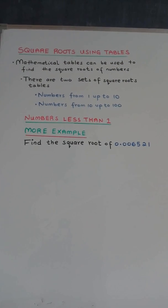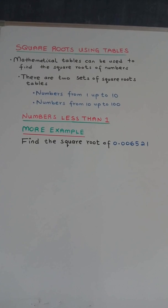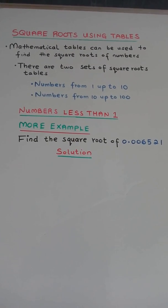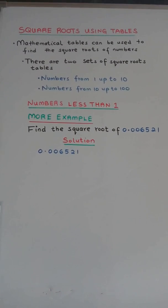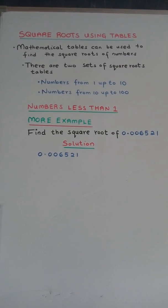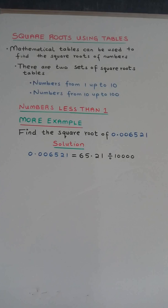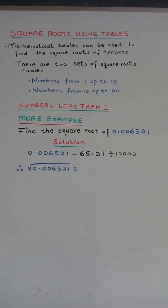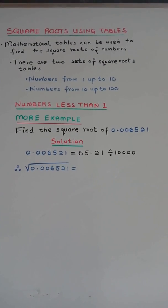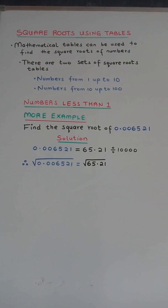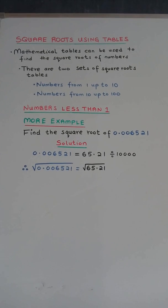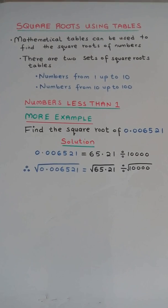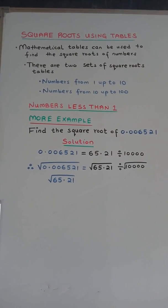More example: Find the square root of 0.0106521. Solution: 0.0106521 is equal to 65.21 divided by 10,000. Therefore, the square root of 0.0106521 is equal to the square root of 65.21 divided by the square root of 10,000.